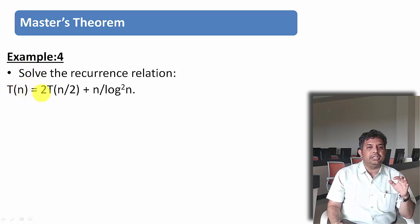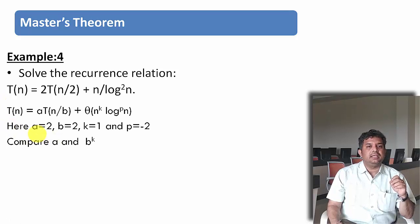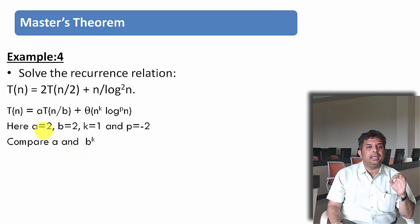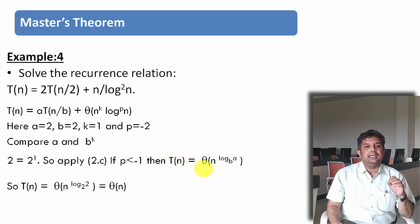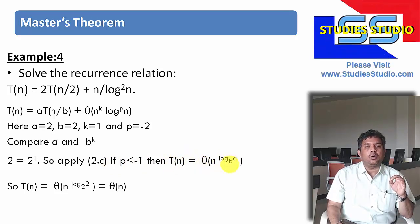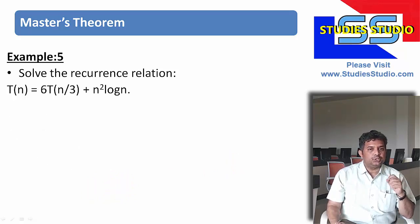The recurrence relation given is T(n) = 2T(n/2) + n/log(log n). Here a = 2, b = 2, k = 1, and p = −2. Comparing a and b^k, both equal 2. Since they are equal and p = −2, which is less than minus 1, we apply condition 2c: T(n) = Θ(n^(log base b of a)). Substituting b = 2 and a = 2, the complexity is Θ(n).